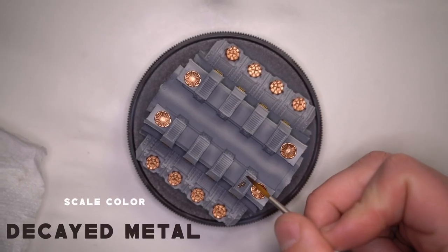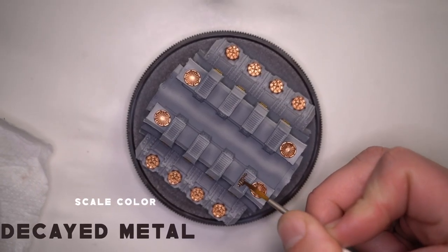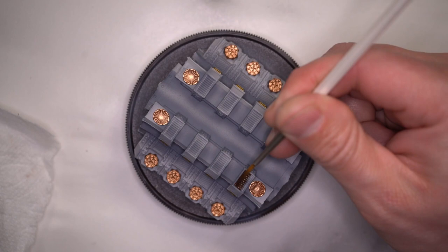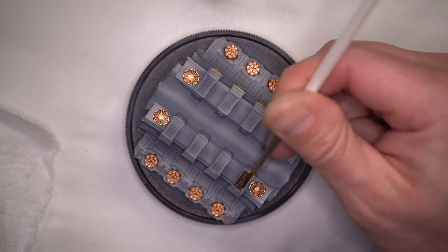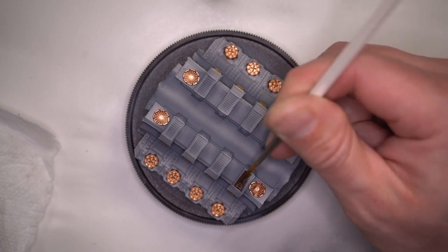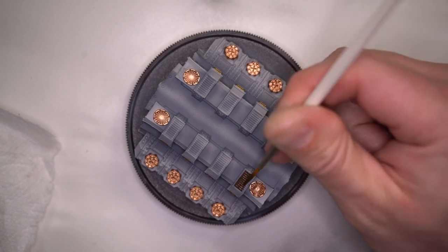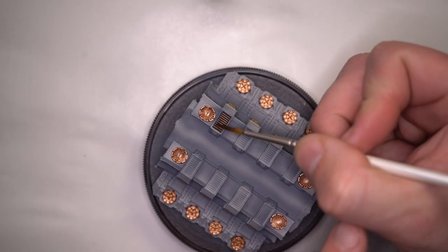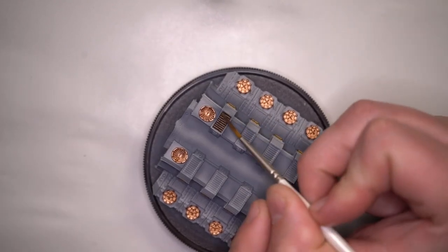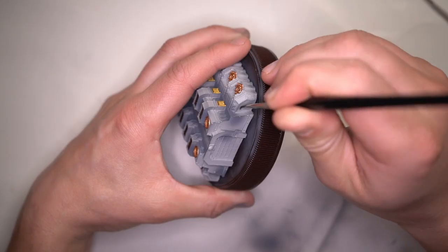I did want the top vents and the front and rear vents to be this really dark decayed metal, because I wanted them to look like they were being overused and really exposed to the elements. Now the oil wash that will go on will end up drying and be almost like an orangey tone in between the vent crevices. But that's fine.